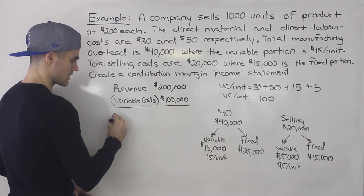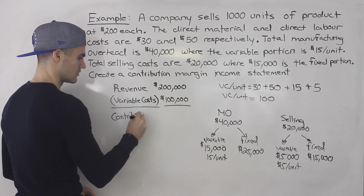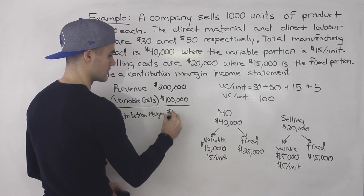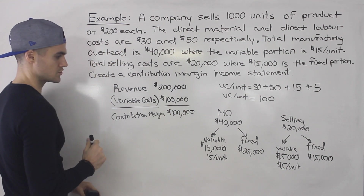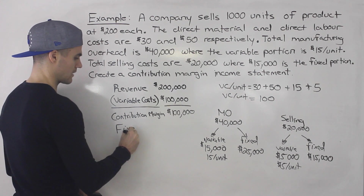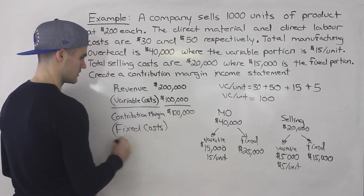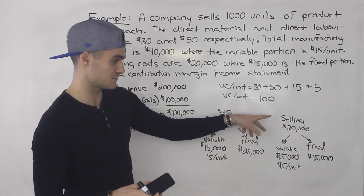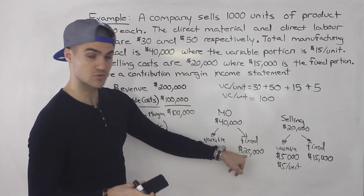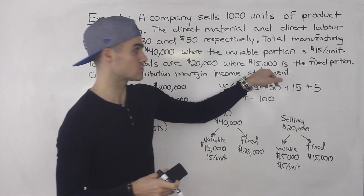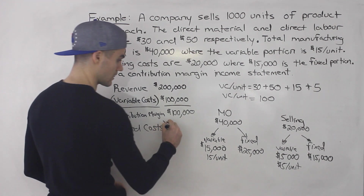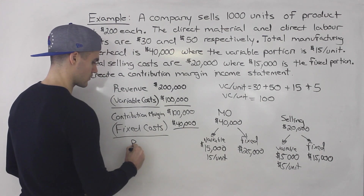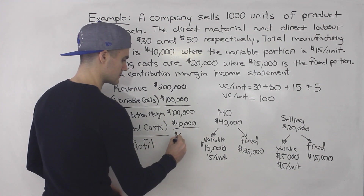Revenue minus variable cost gives us contribution margin: $200,000 minus $100,000 equals $100,000. From the contribution margin we subtract fixed costs. Fixed costs are fixed manufacturing overhead plus fixed period costs — here that's $25,000 plus $15,000, totaling $40,000. So profit comes to $60,000.